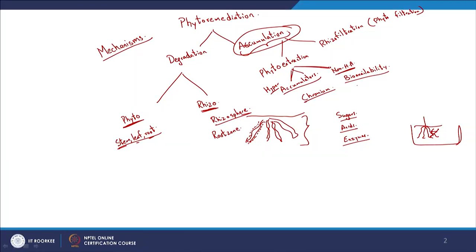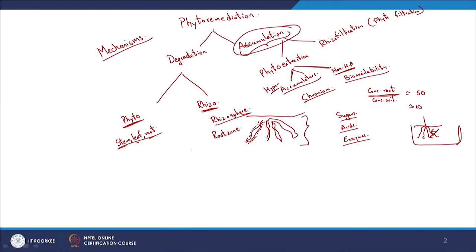There are different factors at play, but one factor that gives an idea about uptake or accumulation is the ratio of concentration in the relevant root to the concentration in the relevant soil for the compound. Typically this ratio is around 50 for some and 10 for some heavy metals. That is with respect to phytoextraction.